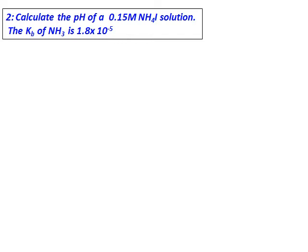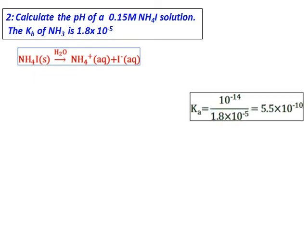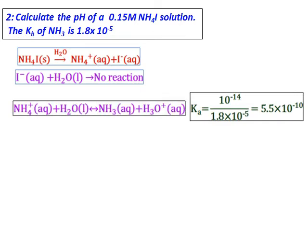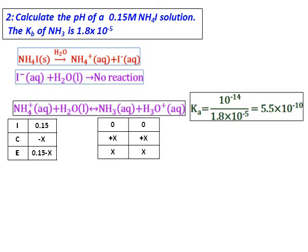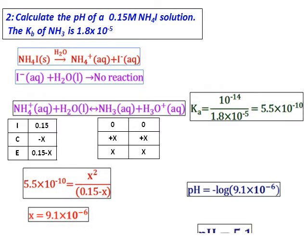Calculate the pH of a 0.18 molar ammonium iodide solution. The Kb of ammonia is given. Ammonium iodide in water ionizes into ammonium ions and I⁻. Since the Kb of ammonia is given, we calculate the Ka of ammonium ion, which comes out as 5.5 × 10⁻¹⁰. I⁻ will not react with water because it is the conjugate base of a strong acid. The ammonium ion reaction with water gives the hydronium ion. After setting up the ICE table and solving for X, the pH is 5.1.